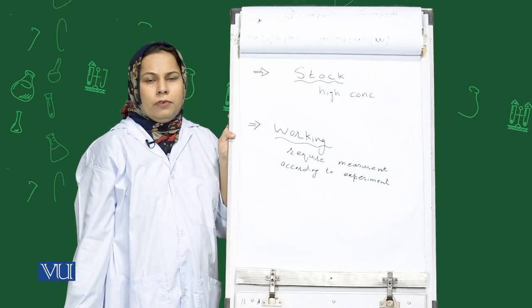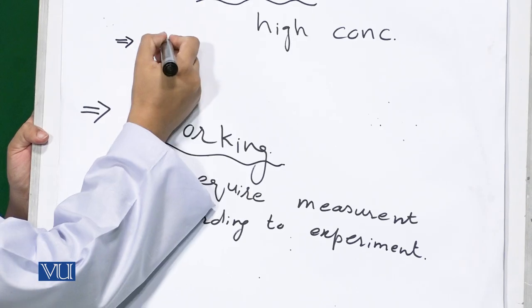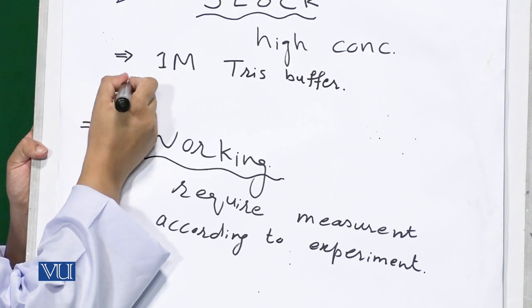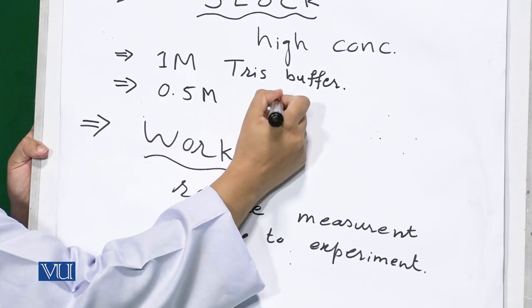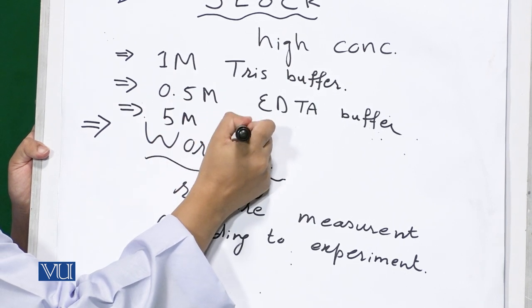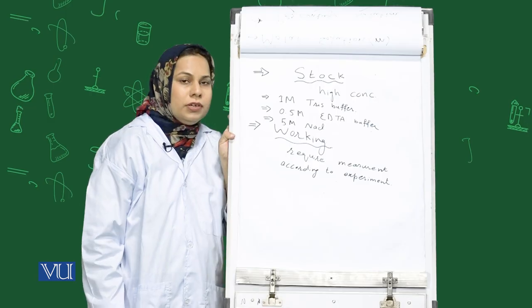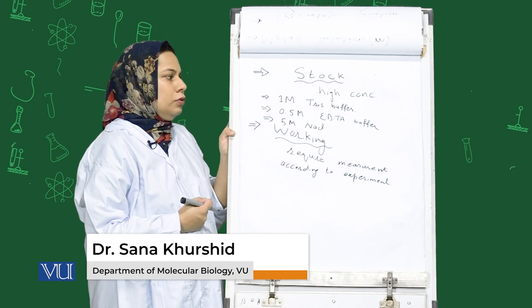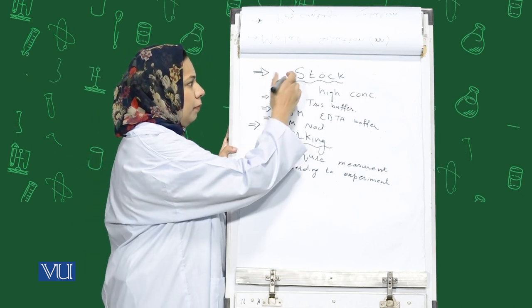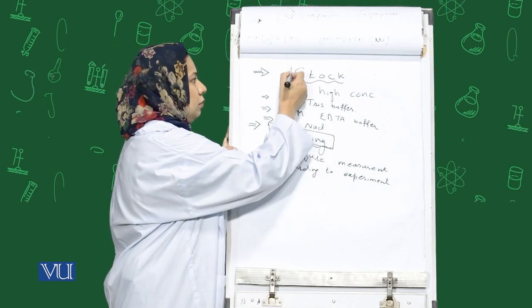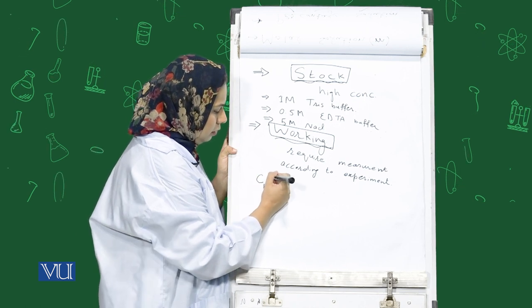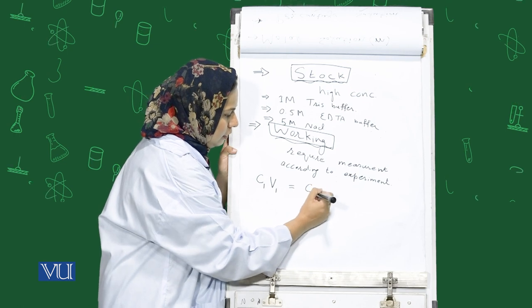Most commonly used buffers in a cell or molecular biology laboratory: our stocks are 1 molar Tris buffer, 0.5 molar EDTA buffer, and 0.5 molar NaCl buffer. In addition to this, we often make a concentrated solution to save storage space as well as to preserve time.